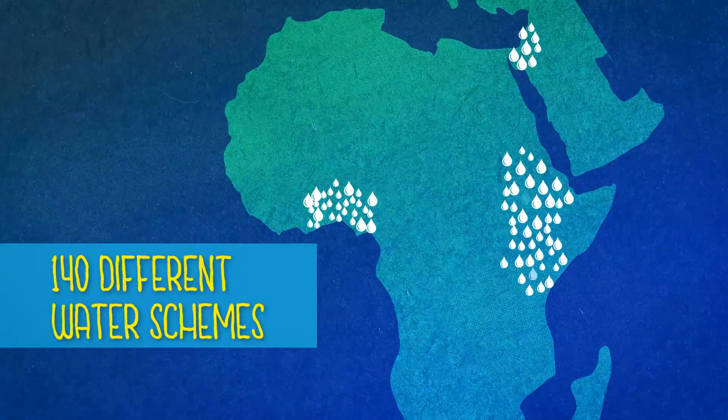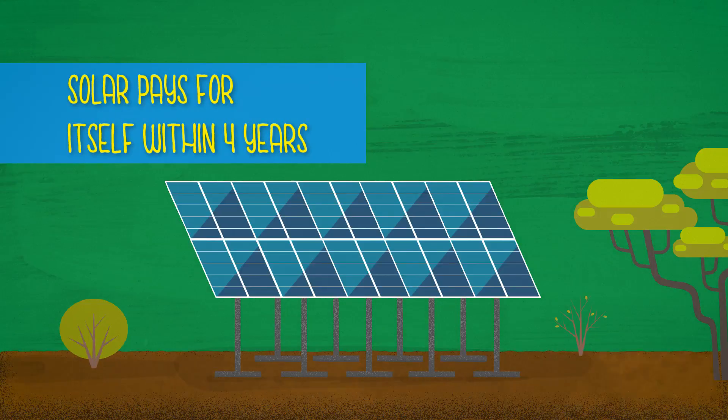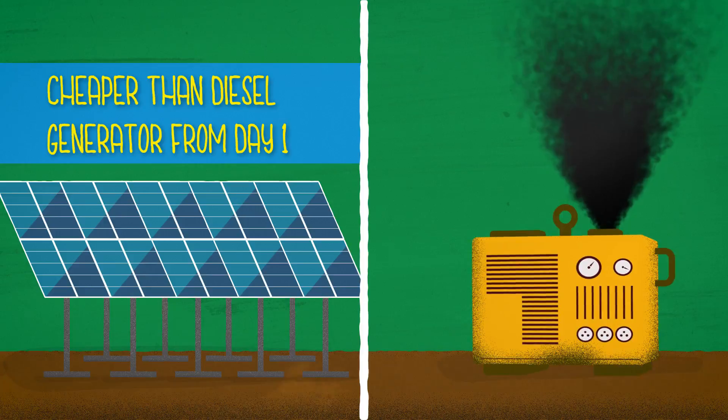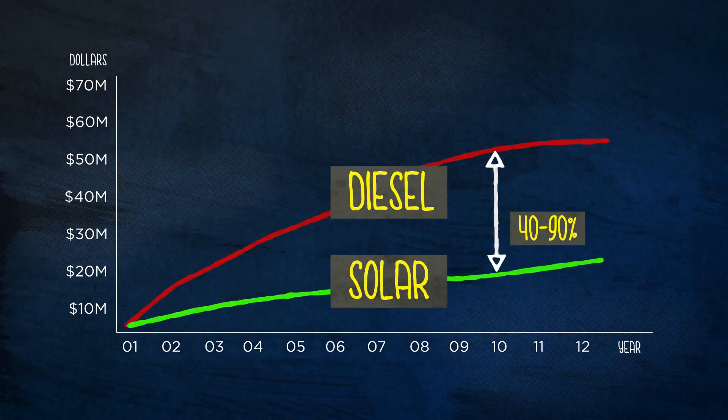We analyzed 340 different water schemes and found that switching to solar will pay for itself within four years. In some circumstances, solar is cheaper than a diesel generator from day one. Over the lifetime of these systems, solar will be 40 to 90% cheaper.